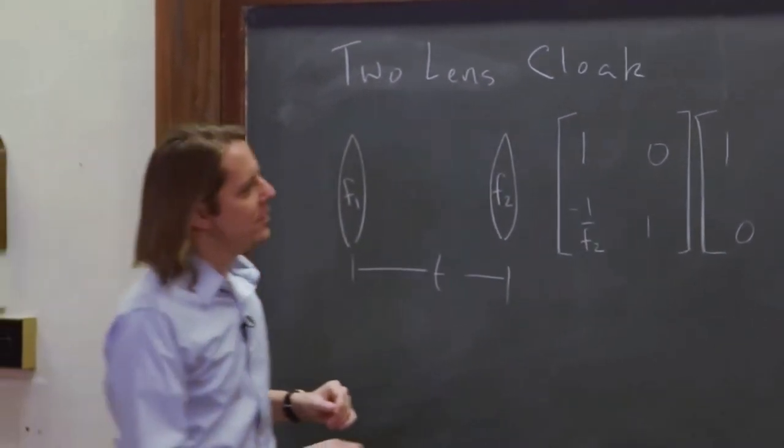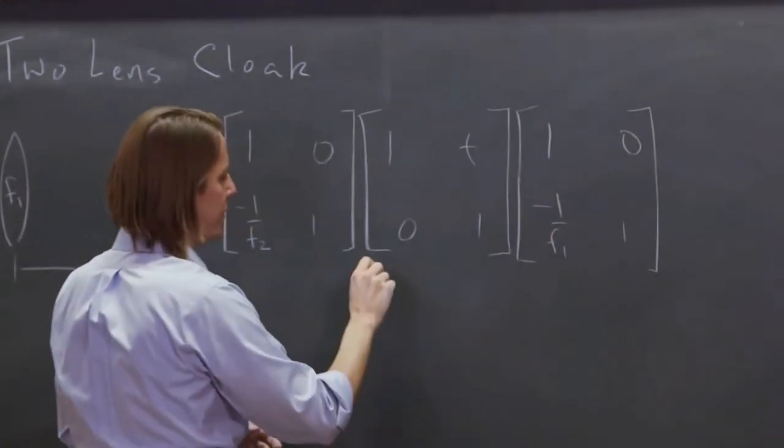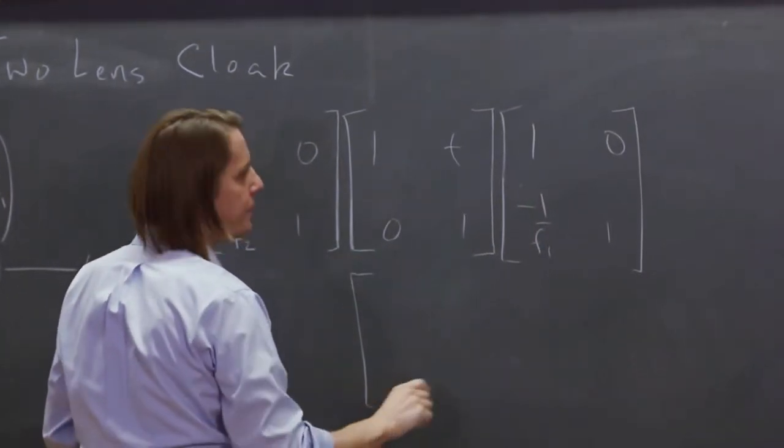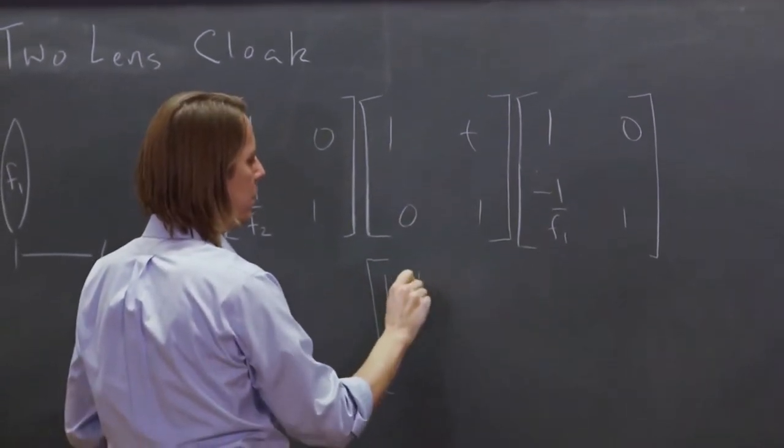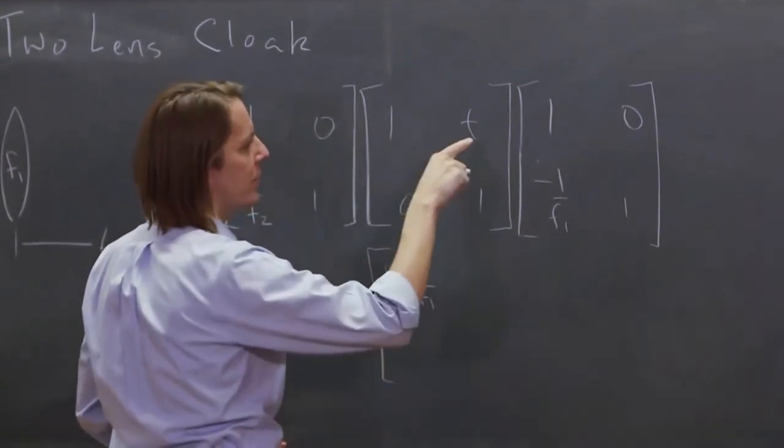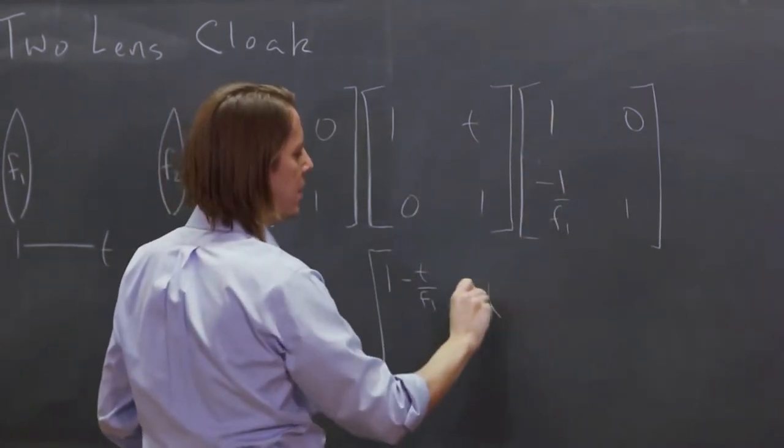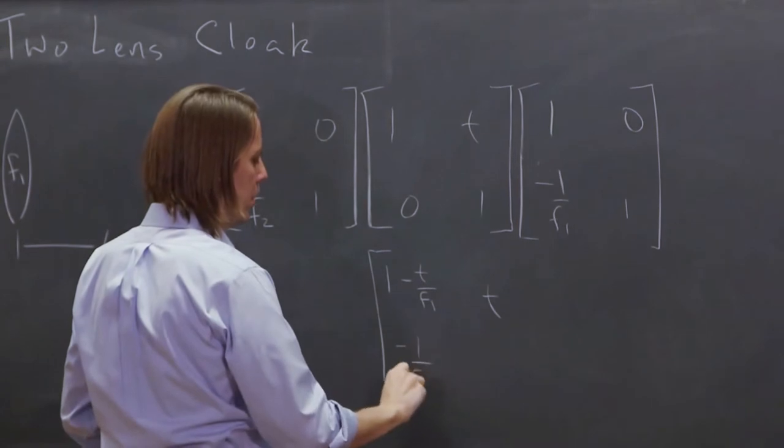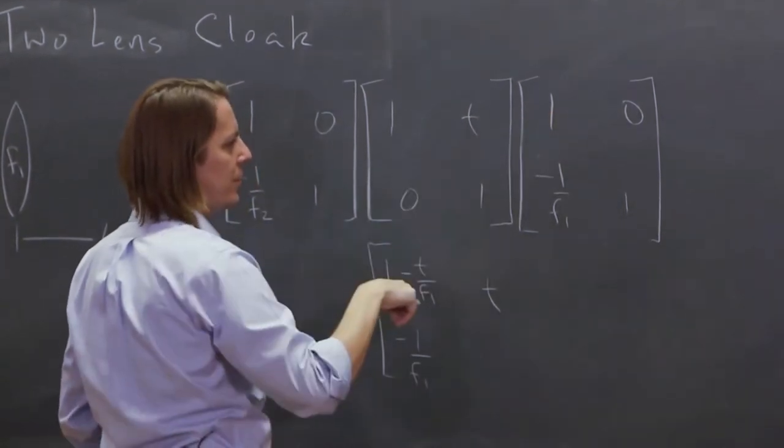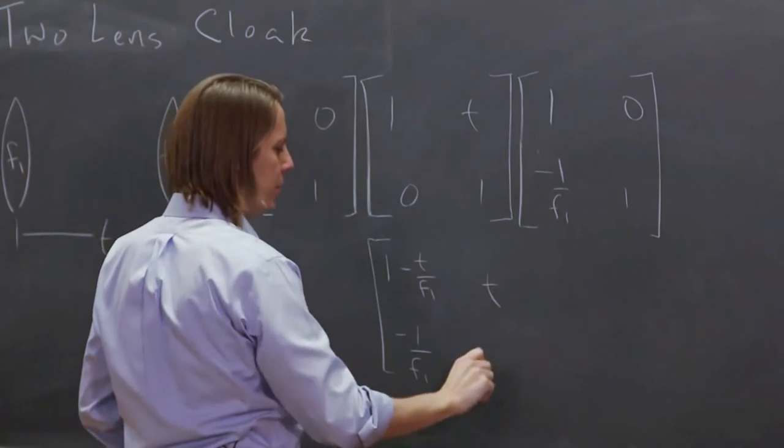So we can start multiplying these out. We'll multiply this one times this one first and see what we get. We get 1 minus T over F1 for that term. We get T for that term. We get minus 1 over F1 for that term, because that's a 0. And then 0 times 0, 1 times 1, 1.